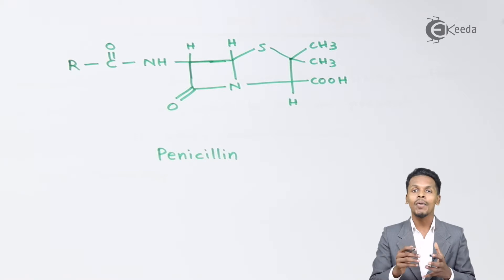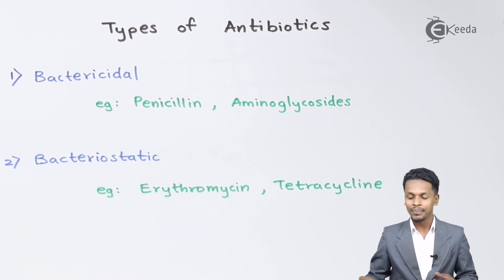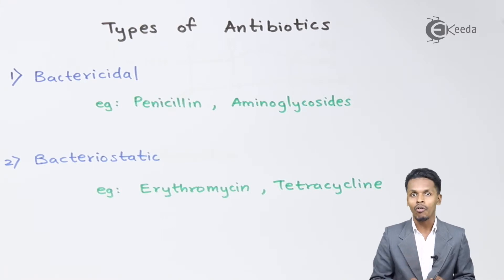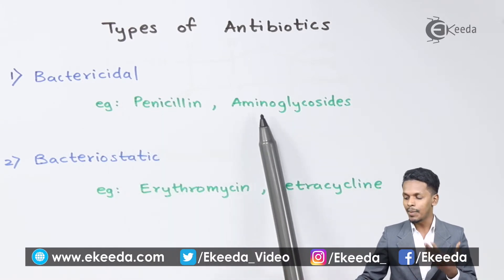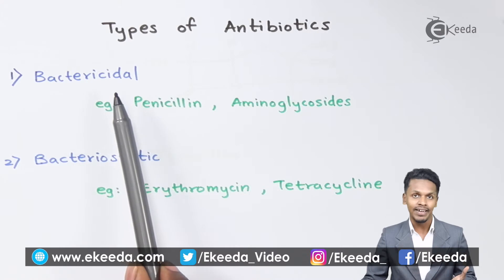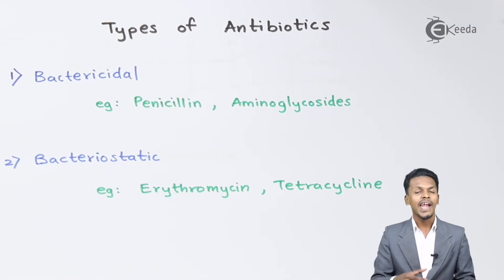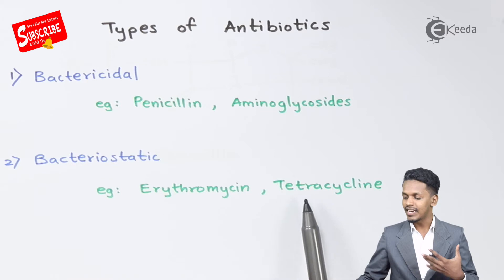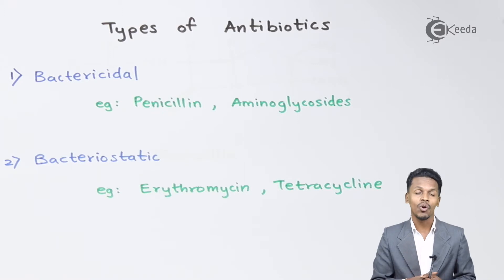Antibiotics are of different types. The two main types are bactericidal and bacteriostatic. Bactericidal antibiotics have the tendency to kill microorganisms or bacteria. Examples include penicillin and aminoglycosides. Bacteriostatic antibiotics, on the other hand, stop the growth of microorganisms rather than killing them. Examples of bacteriostatic antibiotics include erythromycin and tetracycline.